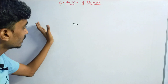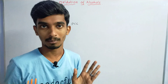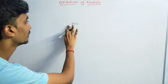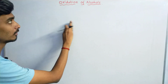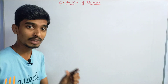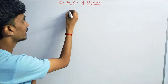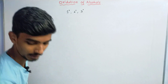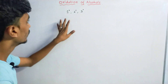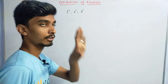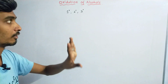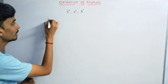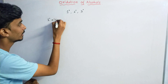We have three kinds of alcohols: primary alcohol, secondary alcohol, and tertiary alcohol. Primary alcohol, secondary alcohol, and tertiary alcohol are the three main types we need to consider for oxidation reactions.